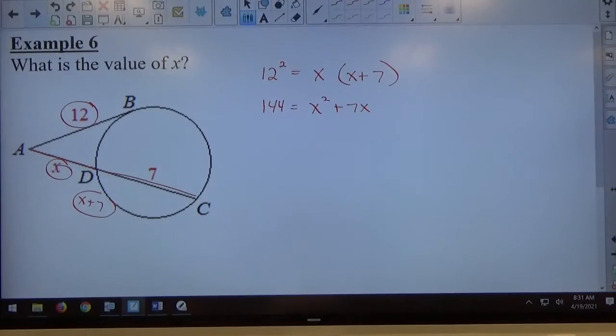When I multiply that out notice I get 144 equals x squared plus 7x. We end up with a quadratic equation so that is a possibility of these problems since we are multiplying things. We end up multiplying x so we're going to get x squared out of it.